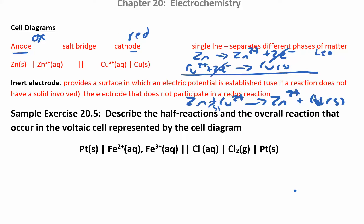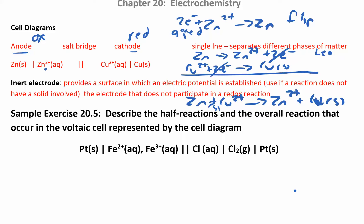What happens if you accidentally write it the wrong way? Suppose you wrote zinc 2+ and added two electrons — that's a reduction half reaction; you're gaining electrons. All you have to do is flip it around to get the oxidation half reaction. If you're not sure where to start, don't worry — just start somewhere. You know the anode has to have oxidation and electrons must come out on the right-hand side. If you accidentally started wrong, just flip it and you're fine.